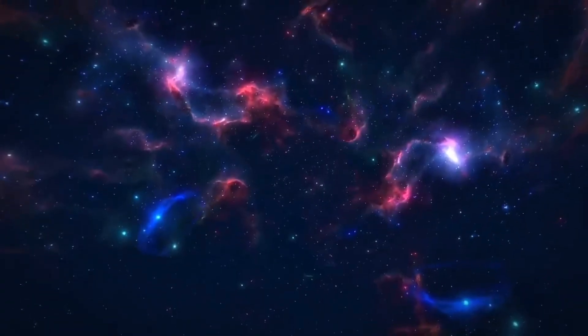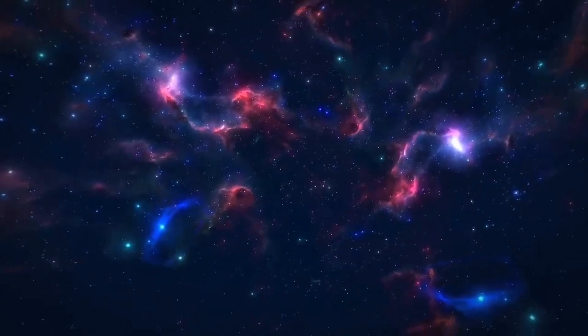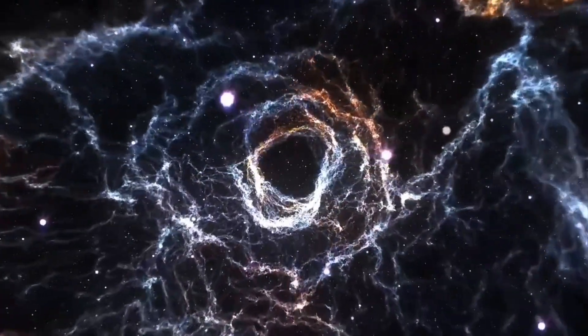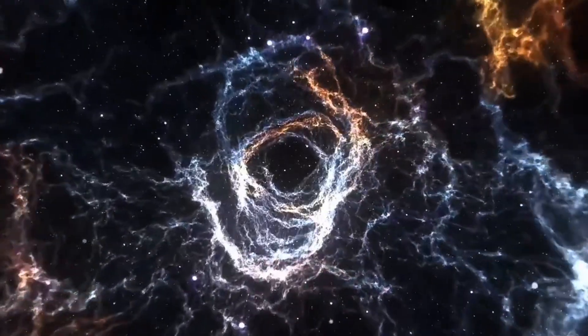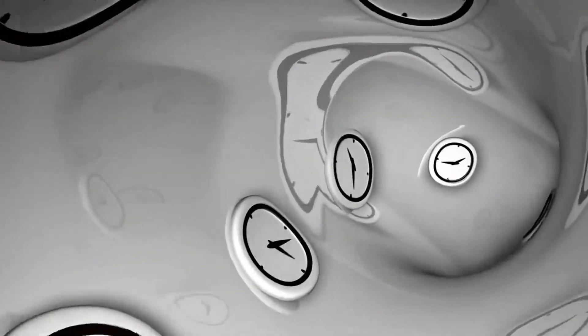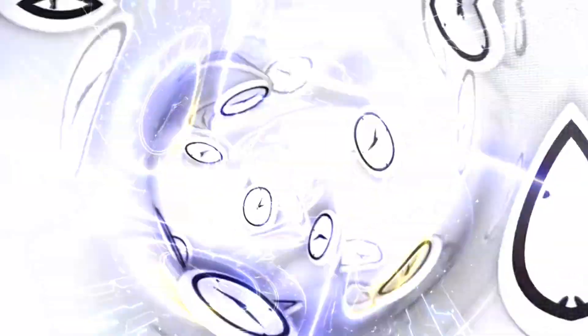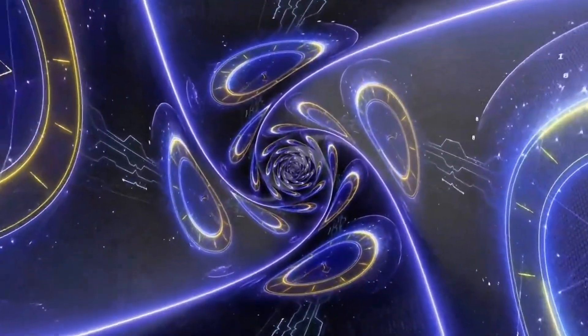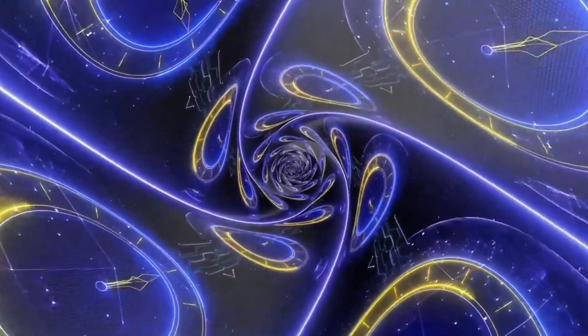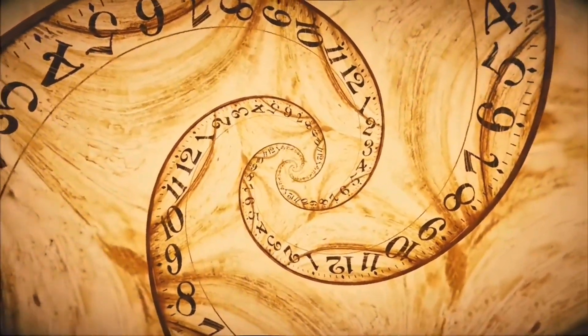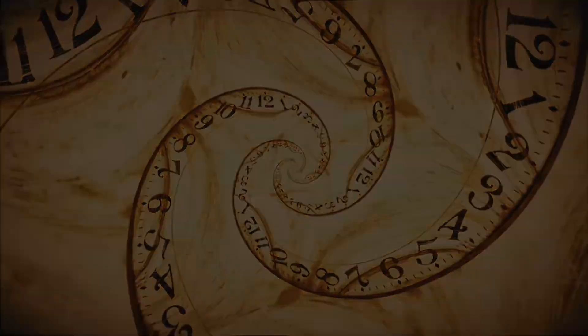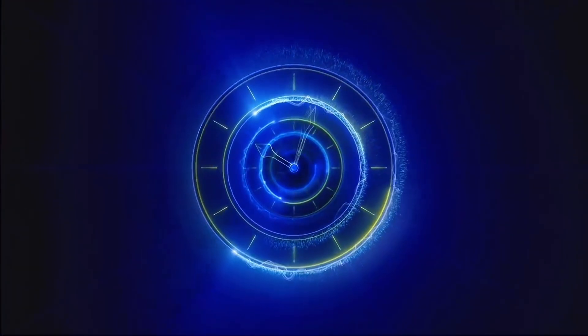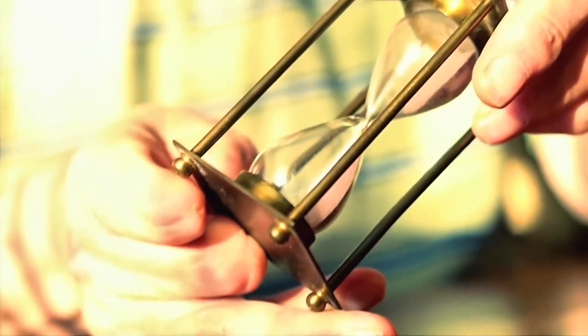So when we tie all these concepts together—causal loops, entropy, relativity—it paints a picture of time that's far more intricate than most of us imagine. Time isn't a river flowing forward. It's a web, a field, a structure that stretches, twists, and occasionally folds in on itself. And sometimes, within its folds, ideas or events appear that shouldn't be possible, like a correction with no origin or a machine built from its own future.